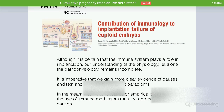The contribution of immunology to implantation failure of euploid embryos remains very controversial. Although it is still uncertain how much the immune system plays a role in implantation, our understanding of the physiology and pathophysiology remains incomplete. It is important to gain clearer evidence on causes, tests, and successful treatments. In the meantime, both immune testing and empirical immunomodulatory treatments must be approached with a lot of caution.